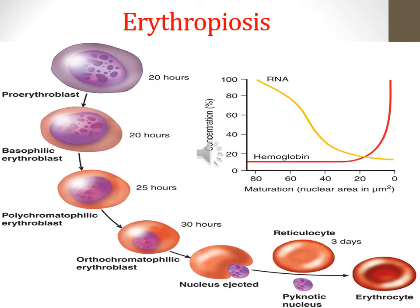This figure describes the process of erythropoiesis, or the synthesis of RBCs. The first stage is called proerythroblast. Then the basophilic erythroblast is formed, followed by polychromatophilic erythroblast, then orthochromatophilic erythroblast. Then the nucleus is ejected and pyknotic nuclei become apoptotic, and the reticulocyte is formed. The last stage is called the erythrocyte.